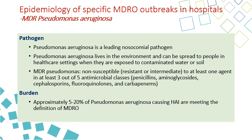MDR Pseudomonas is defined as an organism that is not susceptible — meaning both resistant or intermediate — to one of the agents in three to five antimicrobial classes, including penicillins, aminoglycosides, cephalosporins, fluoroquinolones, and carbapenems. About five to twenty percent of Pseudomonas are meeting the definition of MDRO and causing infection.